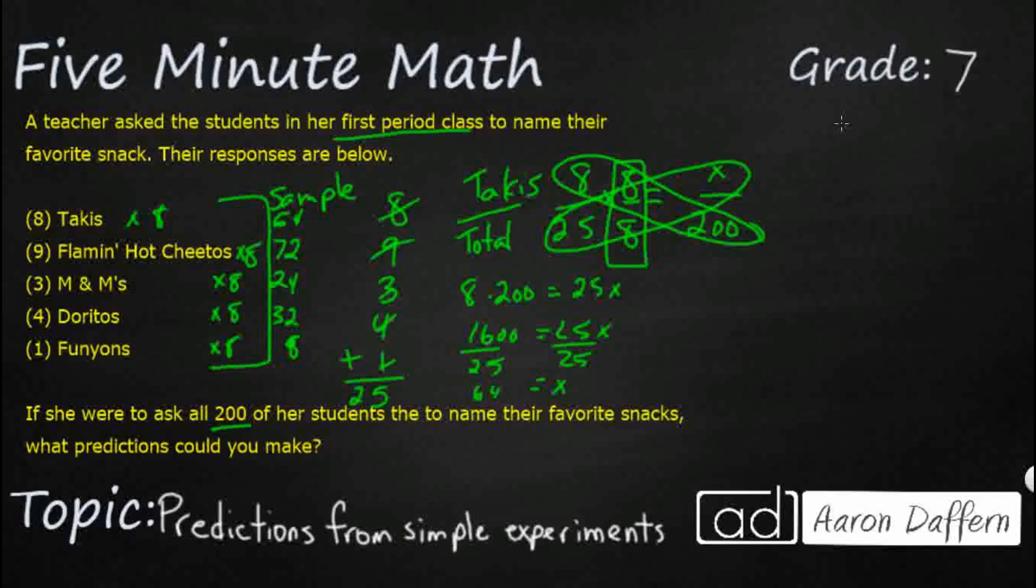Now, another type of prediction that we can always make is how big these are relative to each other. And we don't necessarily even need to know these numbers for that. So we can start looking for patterns. So let's take our Flamin' Hot Cheetos, right? So our Flamin' Hot Cheetos is nine and our M&Ms is three.